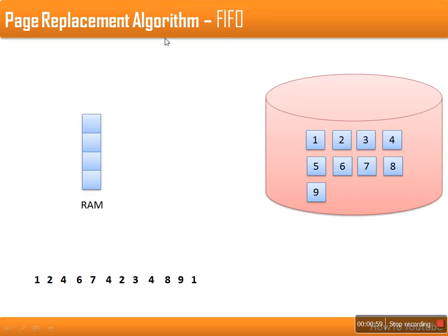Now let's see how the FIFO algorithm actually works. This is the page reference string — it means initially we need the first page, then the second page, then the fourth page, sixth page, seventh page, fourth page, and so on.